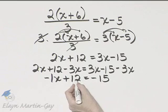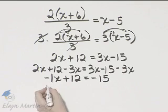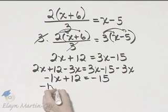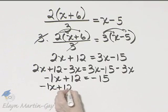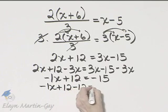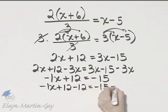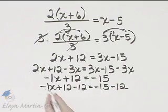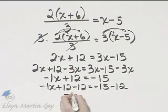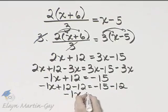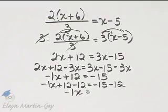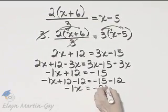Now I will subtract 12 from both sides, so here's my left side, I'll subtract 12. Here's my right side, I'll subtract 12. The left side, I have negative 1x, or negative x, negative 15 minus 12, that's negative 27.